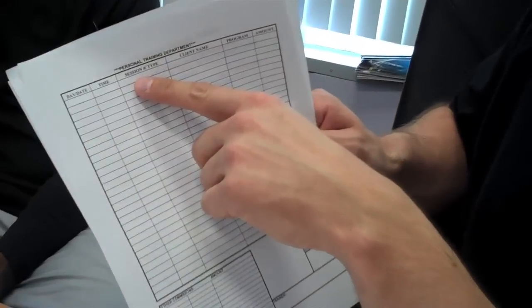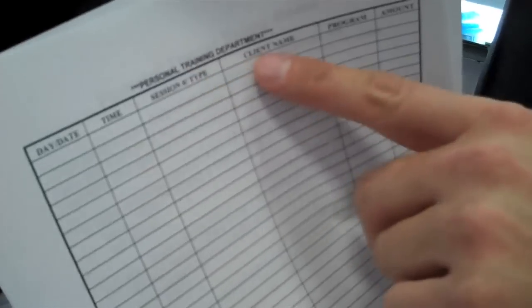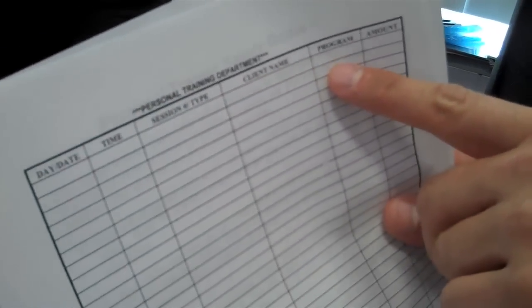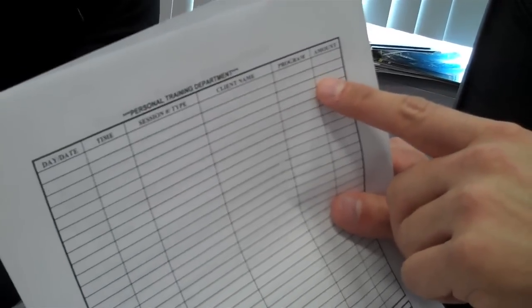This allows you to keep all of your trainers accountable that they're really training these people. You're going to pull this out at the end of the week. You're going to highlight the spot that the person came in. You're going to highlight their card. And then you're going to have a commission sheet for the person. So on the commission sheet, you're going to have the day, the time, the number session of the package. So 2 of 30, 3 of 30. The client name. The program they're on. Once, two, or three times a week. And the amount that they get paid on that person.